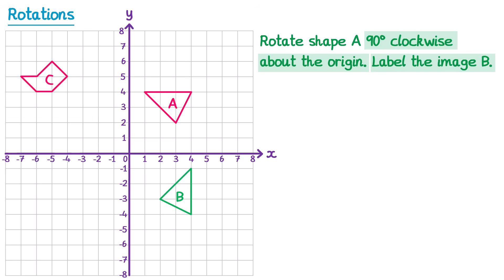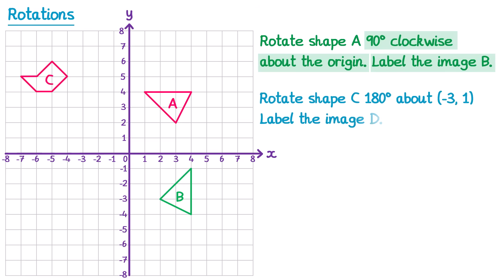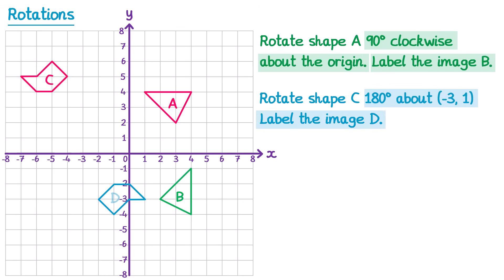Now let's try another one. We've got shape C, and it says rotate shape C 180 degrees about the point (−3, 1), and label the image D. So we take our tracing paper, trace around shape C, then mark a cross at (−3, 1). We place a pencil onto this cross and turn it 180 degrees — half a turn — and it doesn't matter which direction. We turn it half a turn and shape C maps to here. We label the image D.